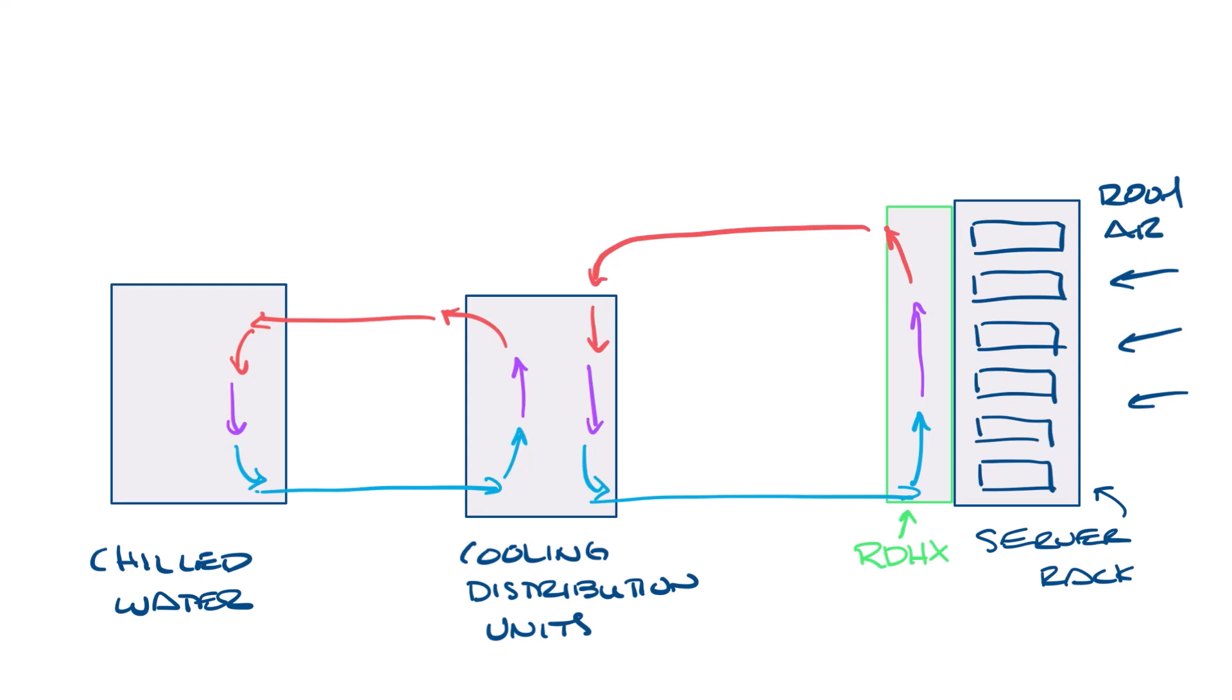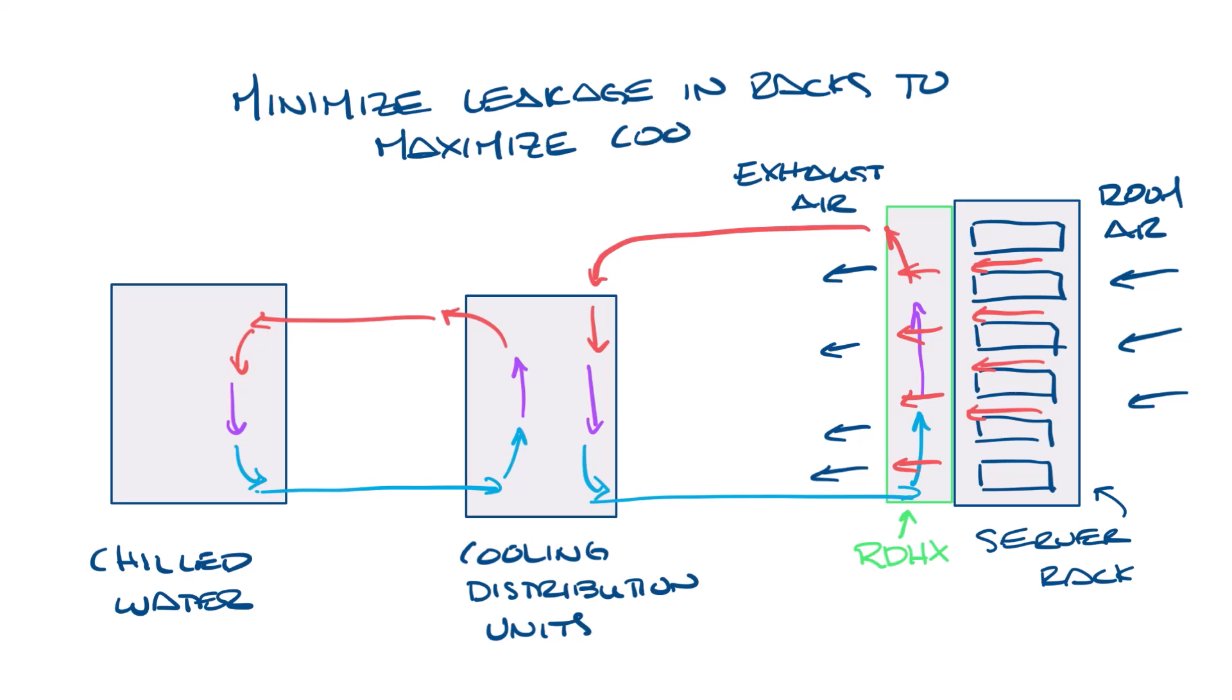Fans move air from the front of the server rack towards the back where the air picks up the heat from the server and moves through the heat exchanger, transferring heat to the water in the rear door heat exchanger. This warms the water, which then flows out of the rear door heat exchanger and back to the CDU. Air is then exhausted out of the back of the rear door heat exchanger. You want to minimize leakage in your rack so that all the air goes through the rear door heat exchanger to maximize your cooling.